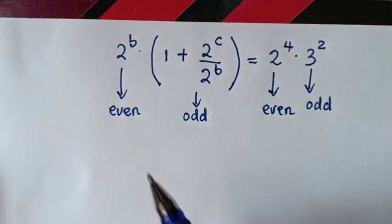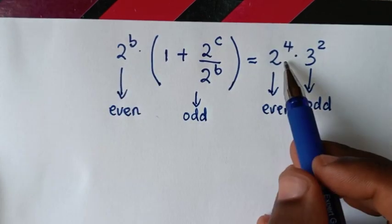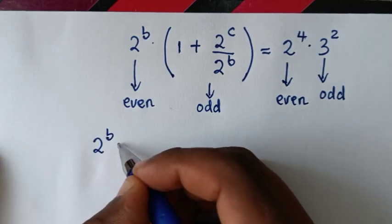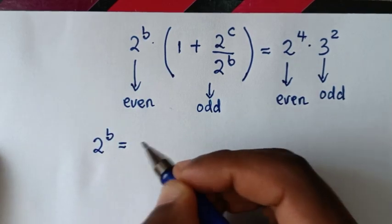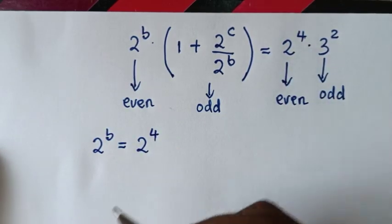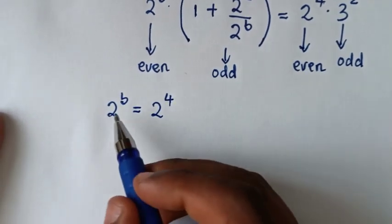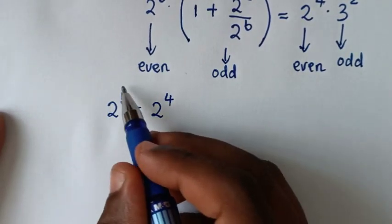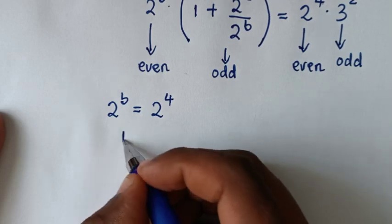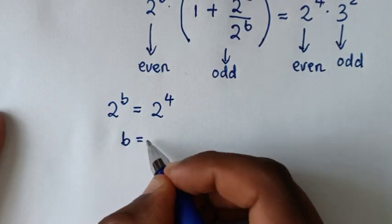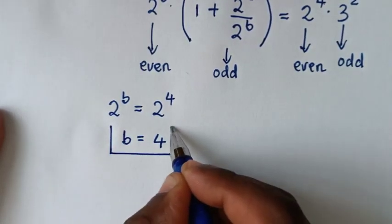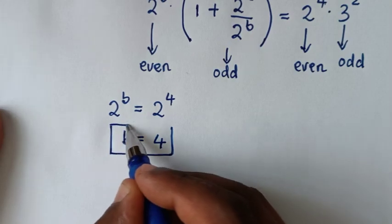Then in the next step, we compare the even numbers. It will be 2 power b is equal to 2 power 4. They have the same base of 2, so we compare the powers: b is equal to 4. So b equals 4, and this is the final answer for the value of b.